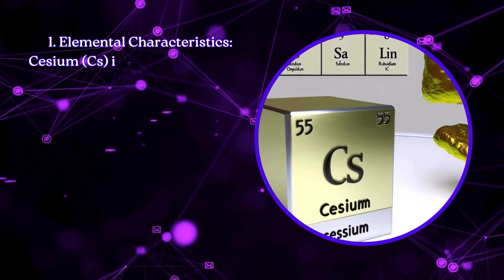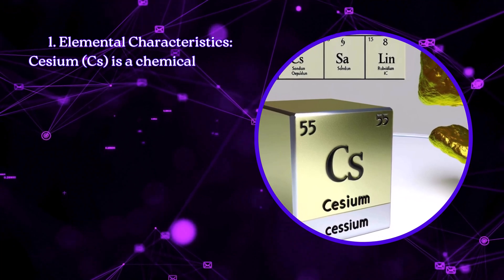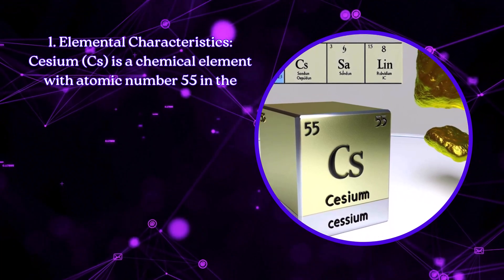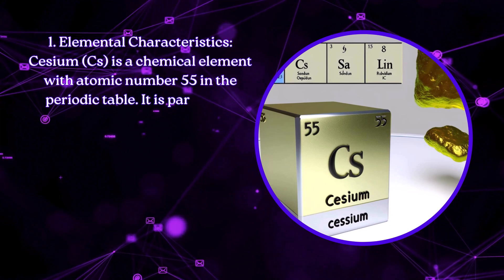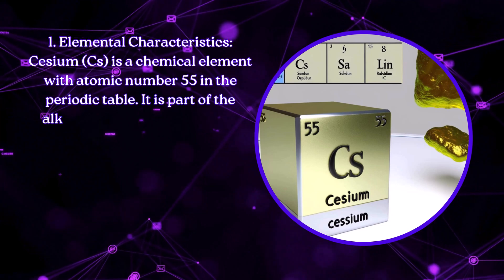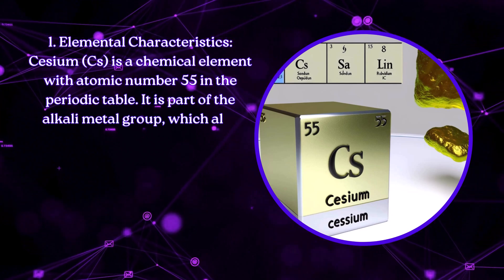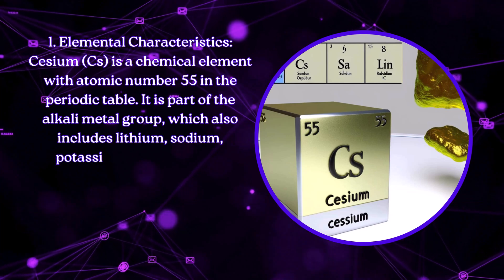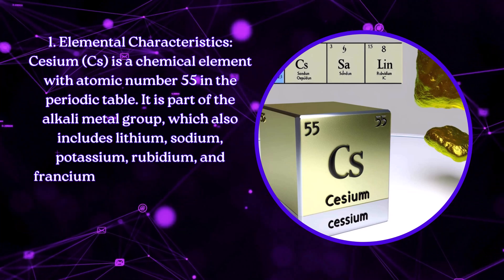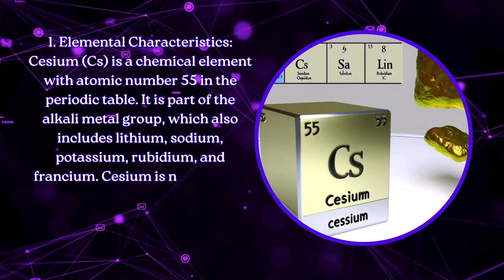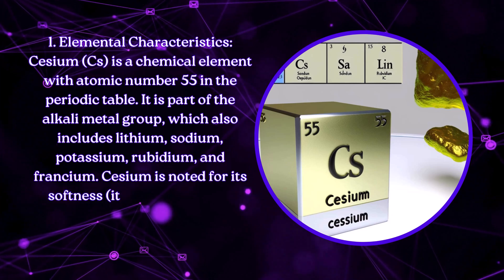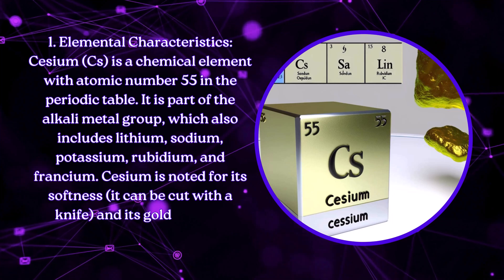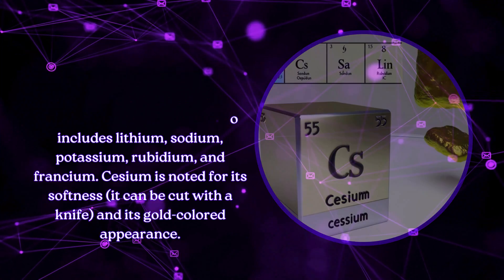Elemental Characteristics: Caesium is a chemical element with atomic number 55 in the periodic table. It is part of the alkali metal group, which also includes lithium, sodium, potassium, rubidium, and francium. Caesium is noted for its softness — it can be cut with a knife — and its gold-colored appearance.